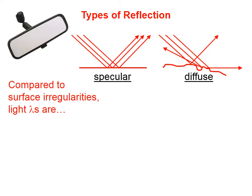You'll get specular reflection if, compared to the surface irregularities, light's wavelengths are large. And you'll get diffuse reflection if, compared to the surface irregularities, light's wavelengths are small.